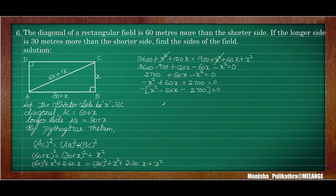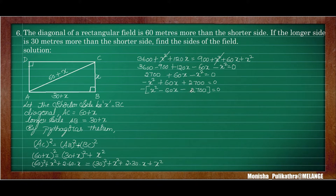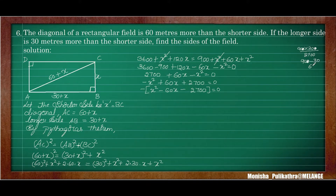We need two middle terms whose product is 2700 and difference is 60. Taking 90 and 30: 90 into 30 equals 2700 and 90 minus 30 equals 60. So the equation factors as x minus 90 times x plus 30 equals zero.